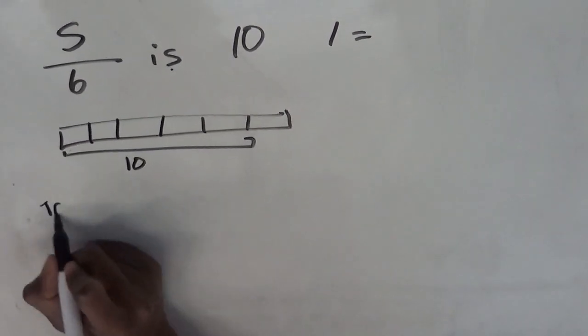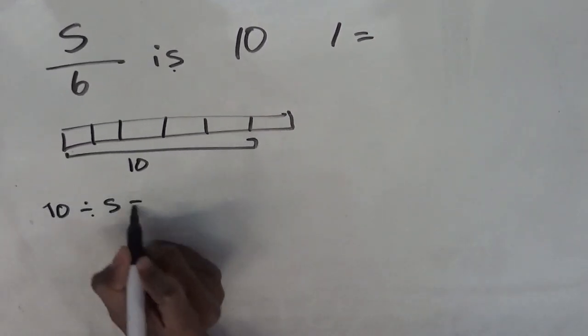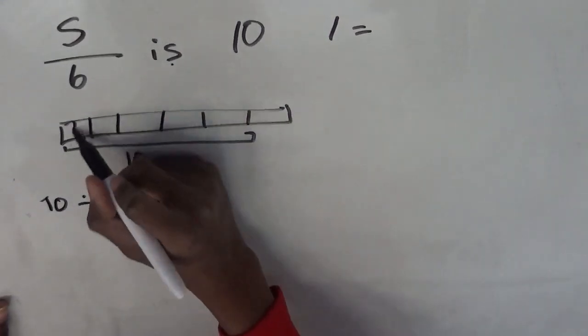We then do 10 divided by 5, which will give us the value of 1 block, which is 2.